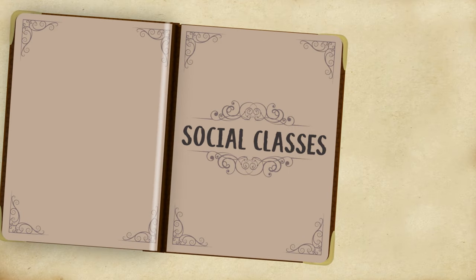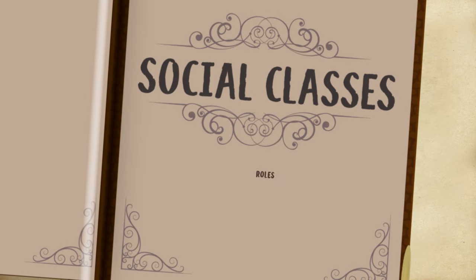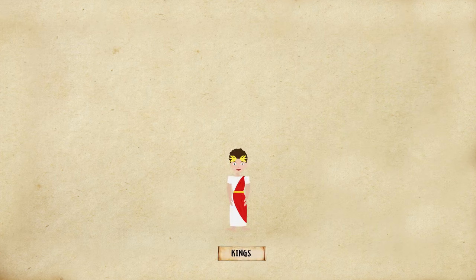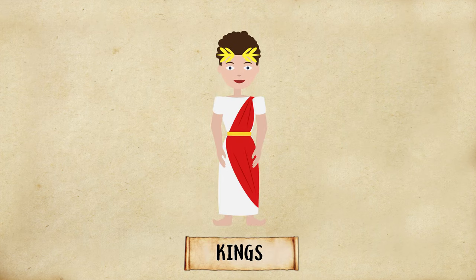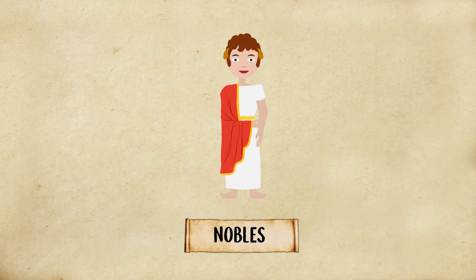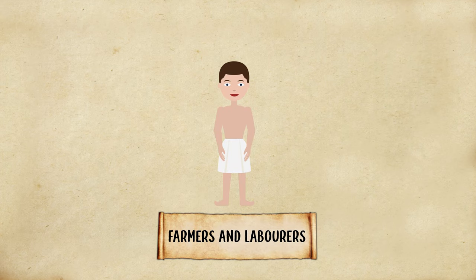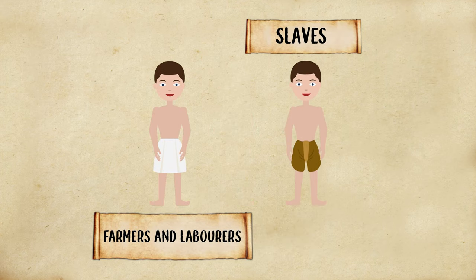Through a historian's lens, the term social classes means how a civilization is divided into classes that have different roles, responsibilities, and privileges. For example, most ancient civilizations are ruled by kings and governed locally by nobles. A working class of farmers and laborers made up most of the population and, in some cases, the lowest class were slaves.